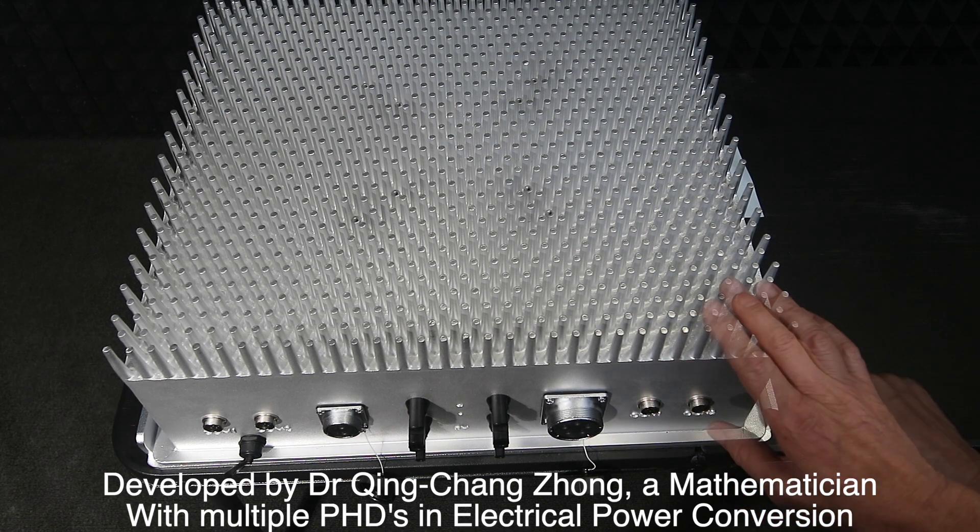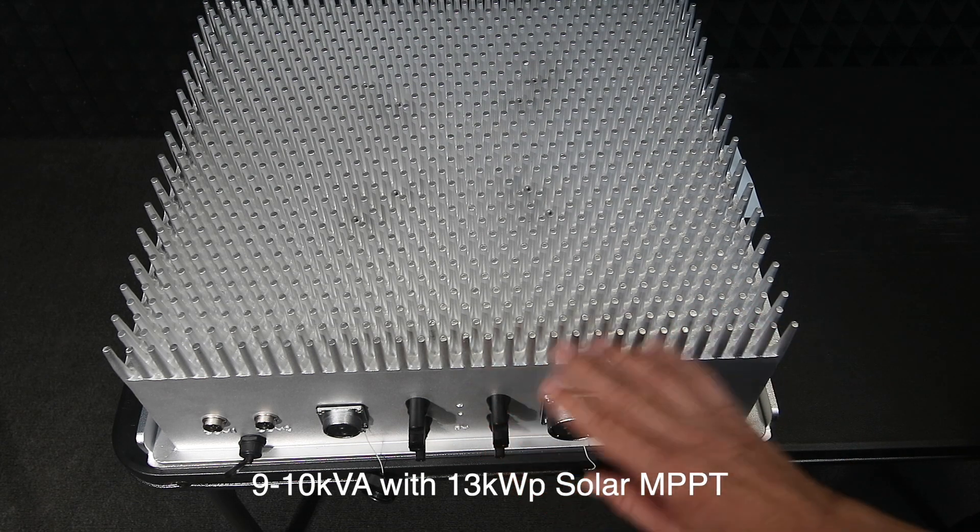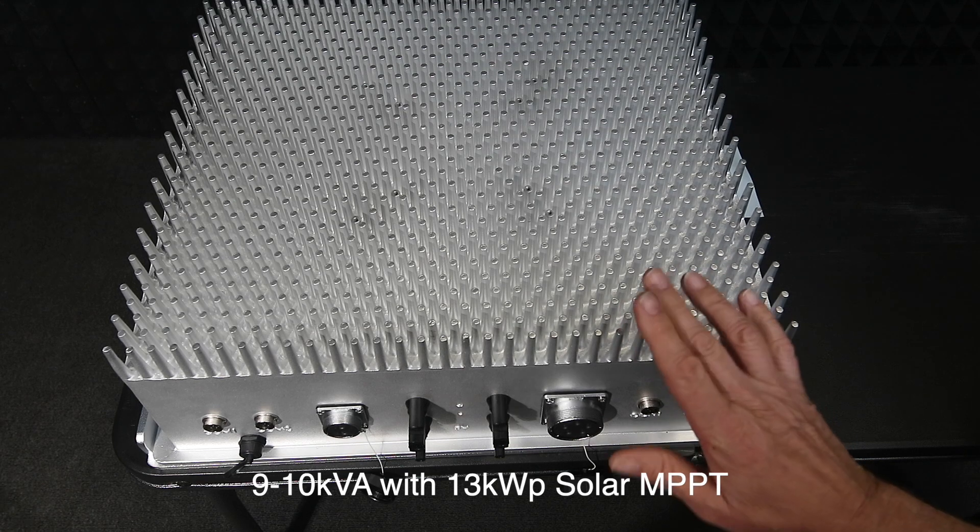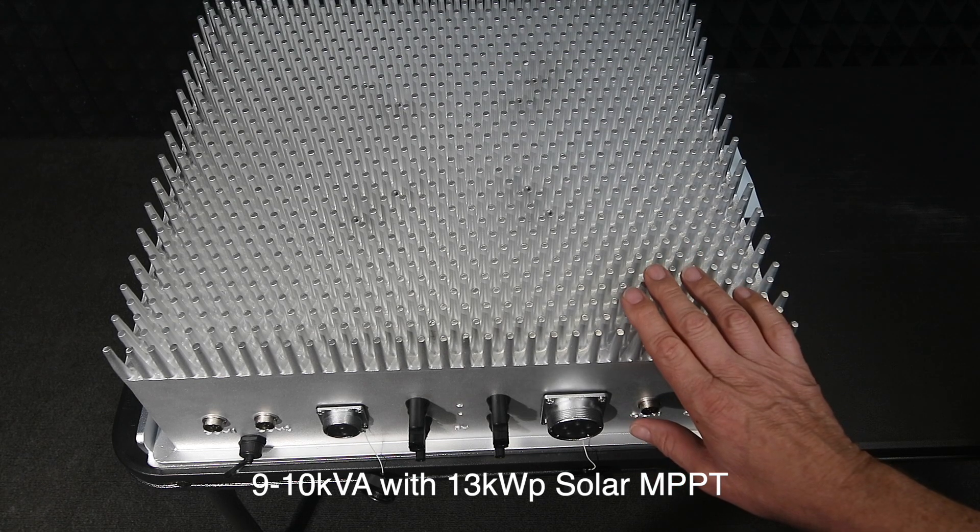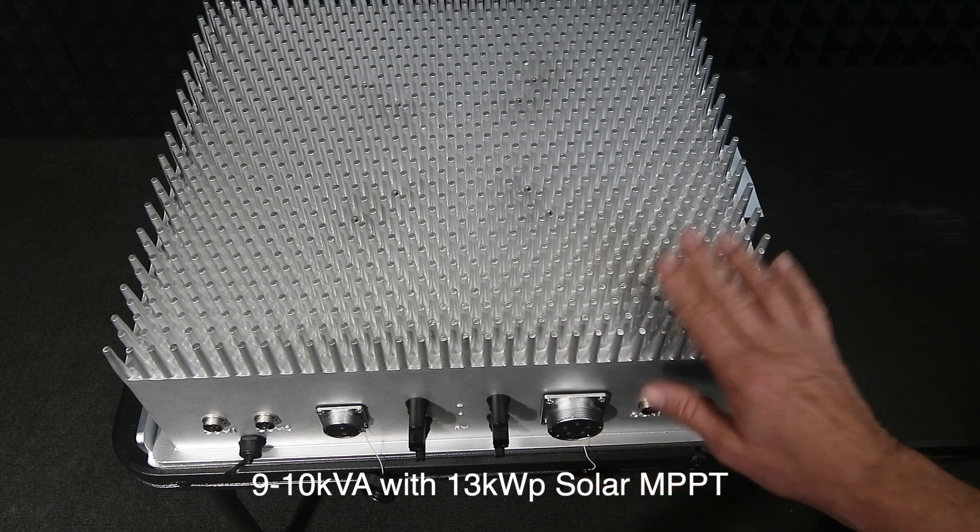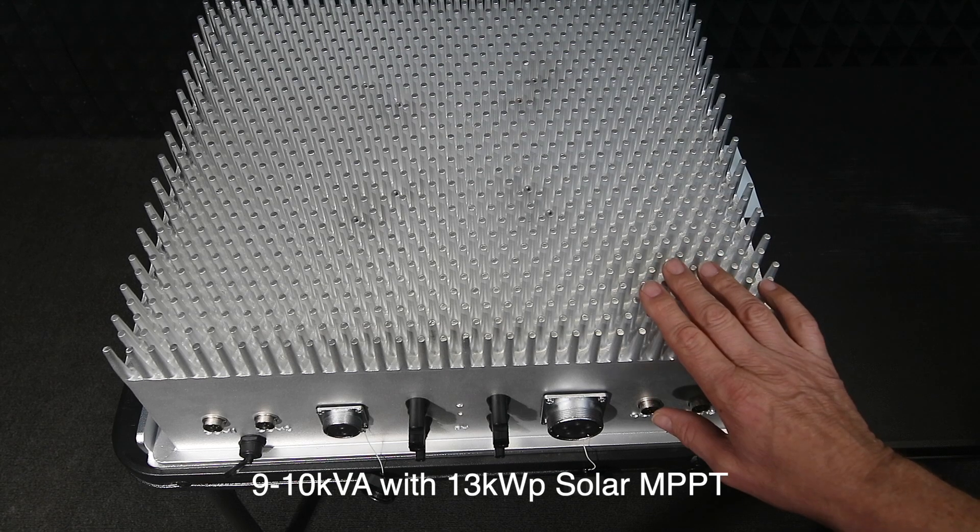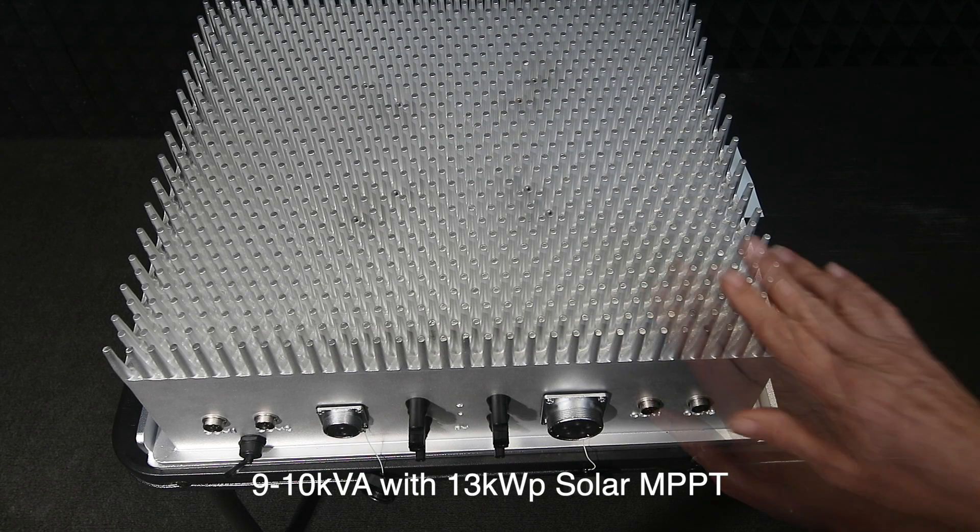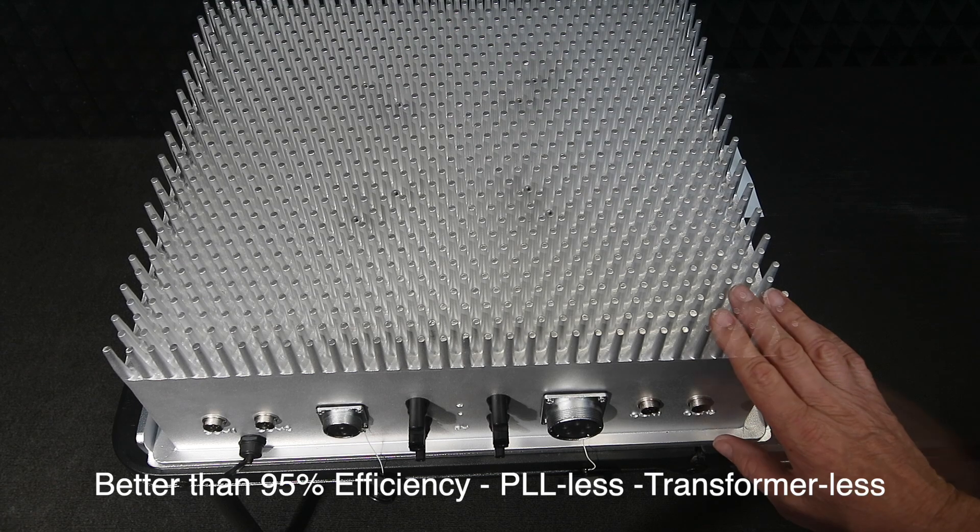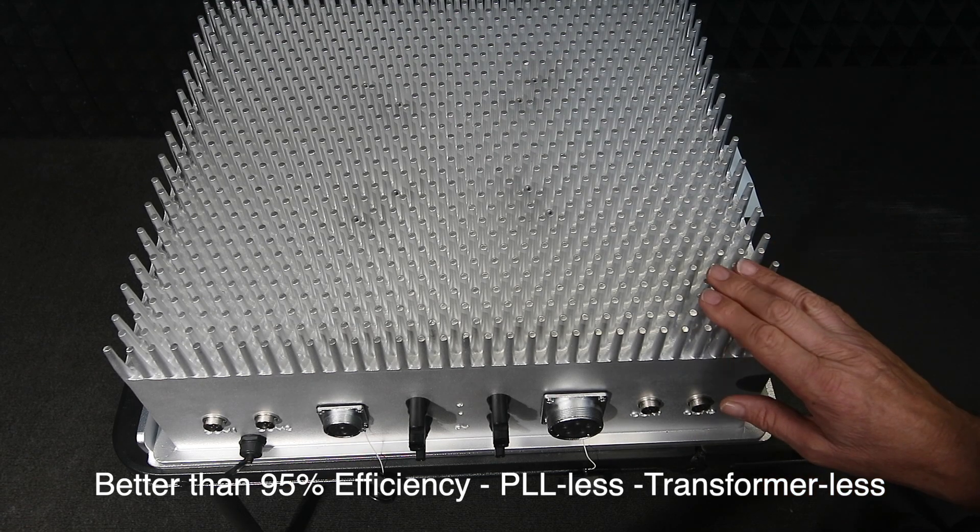Solar input to it is about 13 kilowatts. The unit is 9 to 10 kVA in that range—it can do a boost up to 12, but normally we say this is 9 to 10 kVA. The efficiency is better than 95%. The unit is PLL-less, that's Phase Lock Loop—it doesn't have that in here.